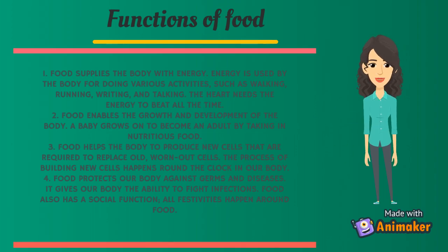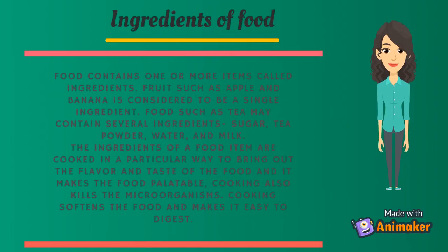Food also has a social function — all festivities happen around food. Food contains one or more items called ingredients. Fruits such as apple and banana are considered to be a single ingredient, while food such as tea may contain several ingredients: sugar, tea powder, water, and milk. The ingredients of a food item are cooked in a particular way to bring out the flavor and taste, making the food palatable. Cooking also kills microorganisms and softens the food, making it easy to digest.